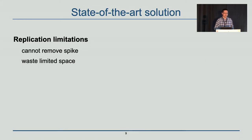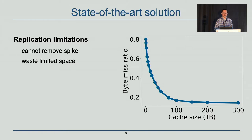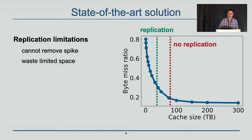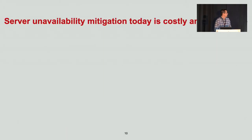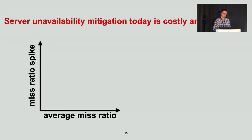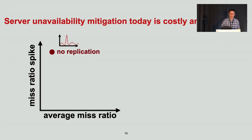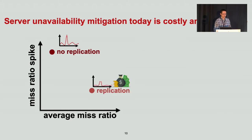Besides being unable to remove spikes, the state-of-the-art solution also wastes limited space. This figure shows the miss ratio of a production cache cluster at different cache sizes. We observe that compared to no replication, replication increases the miss ratio by a relative 30%. This is the cost paid by replication in order to become fault-tolerant. So no replication has a high miss ratio spike with relatively lower average miss ratio, while replication has a smaller miss ratio spike but significantly increases the miss ratio.